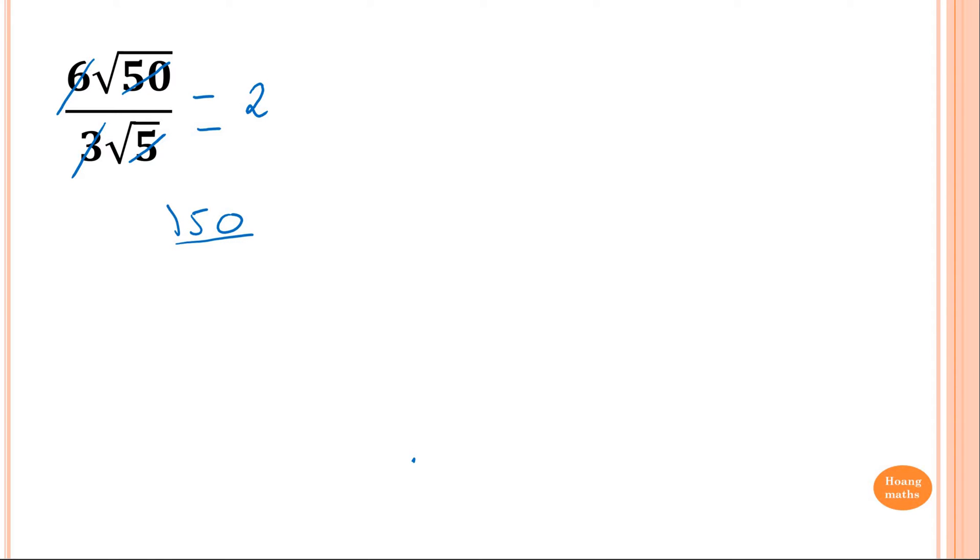So 50 over 5 is 10. So that means 2 square root of 10. That's what it is.